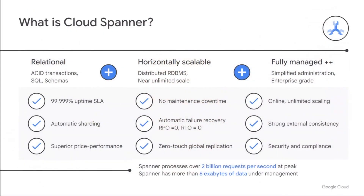Cloud Spanner is a fully managed, horizontally scalable relational database service. Fully managed means you don't have to worry about binary upgrades, applying patches — we take care of that for you. On horizontal scalability, something you've probably heard from non-relational databases, Spanner does automatic sharding of data. It's a distributed RDBMS with near unlimited scale, without compromising consistency. It's a fully relational database service with full SQL support, ACID transactions, schemas. It's a zero maintenance downtime service — even schema changes are applied while you are completely online.